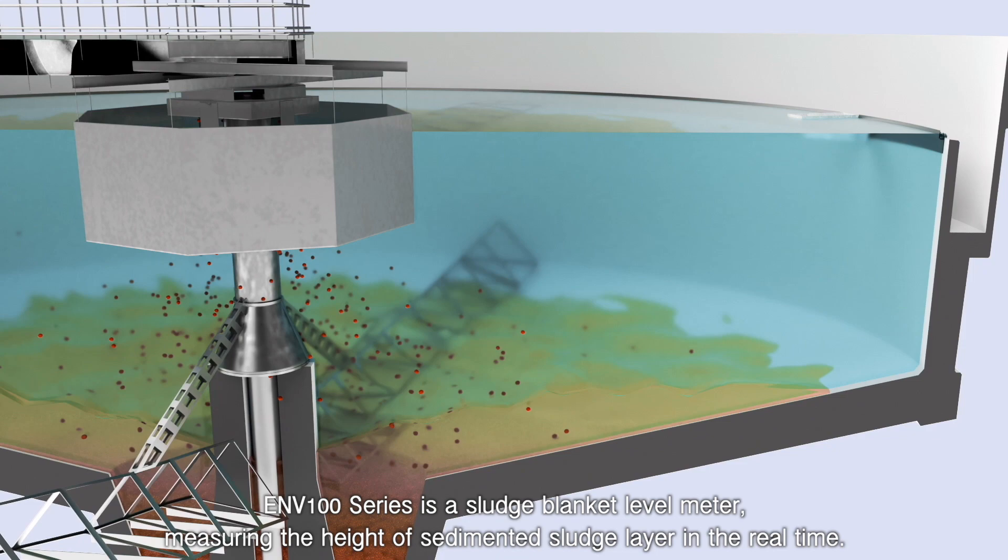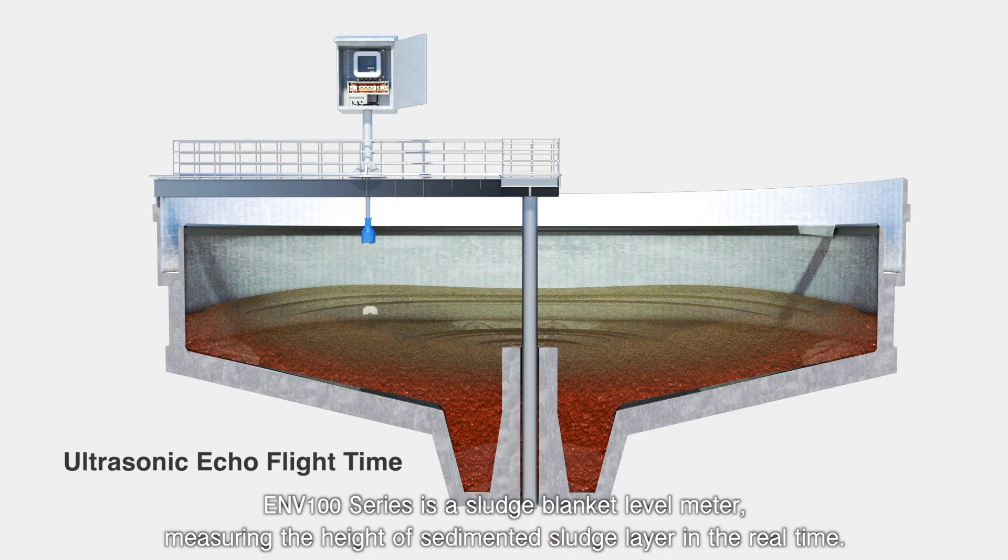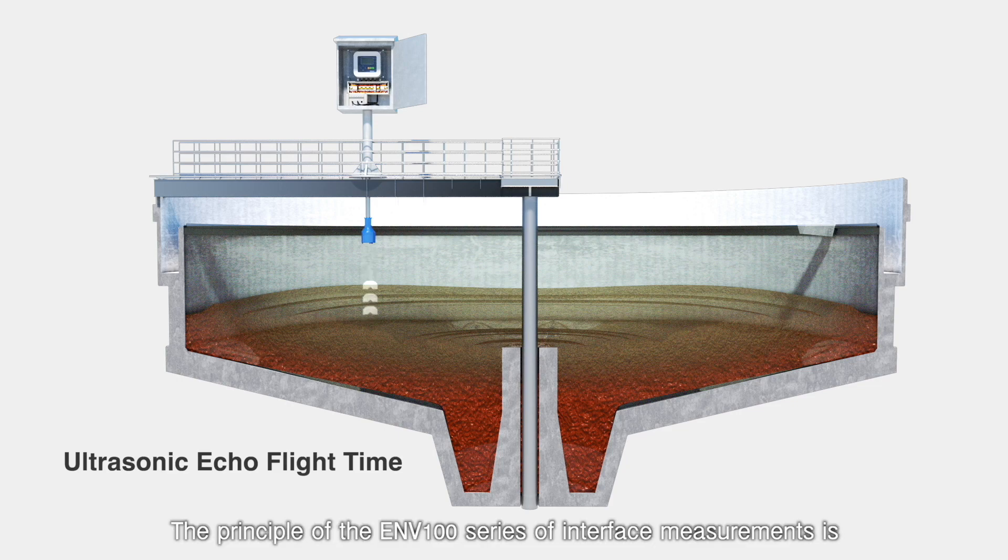ENV100 Series is a sludge blanket level meter, measuring the height of sedimented sludge layer in real time. The principle of the ENV100 Series of Interface Measurements is ultrasonic echo flight time.